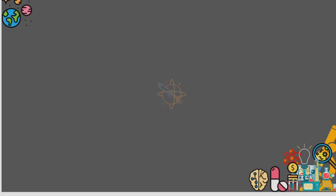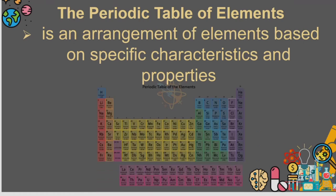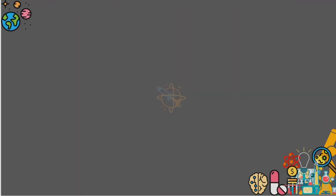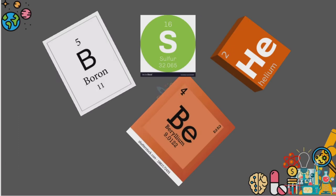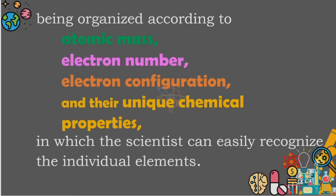The periodic table of elements is an arrangement of elements based on specific characteristics and properties. Being organized according to atomic mass, electron number, electron configuration, and the chemical properties in which scientists can easily recognize the individual elements.